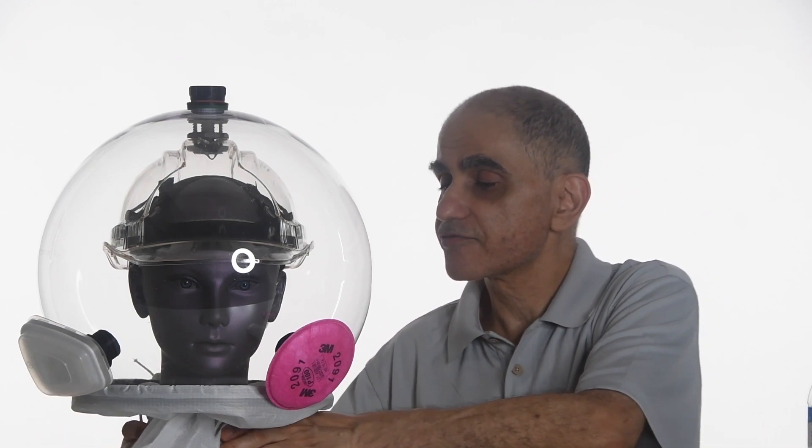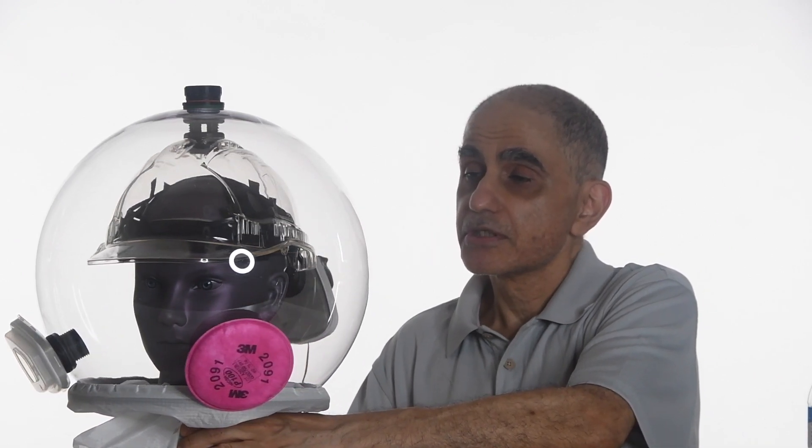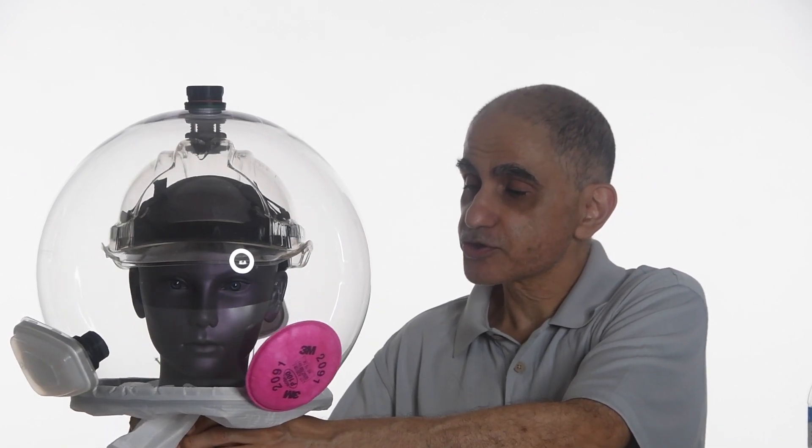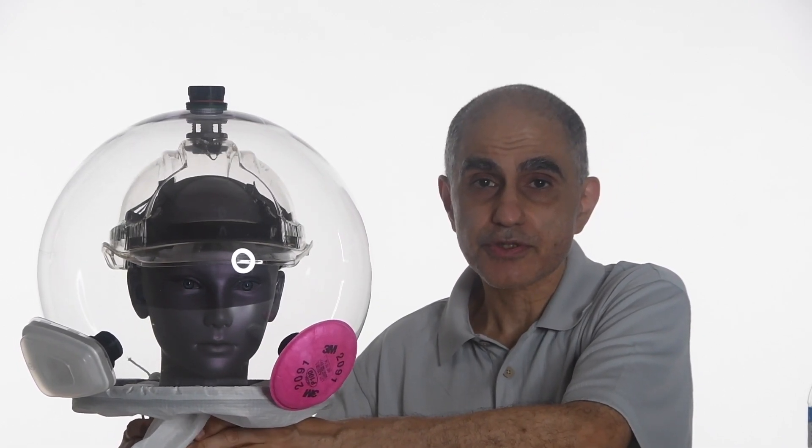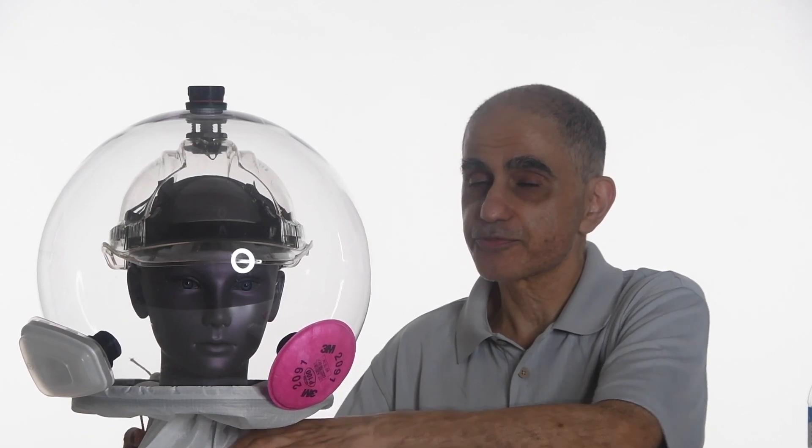And then the filtration happens via an air pump, suction pump, which is in the back. This is an early prototype of it that also filters the air going out. So that's important, because basically you're protecting people around you and not just protecting yourself.